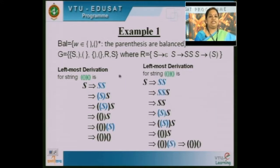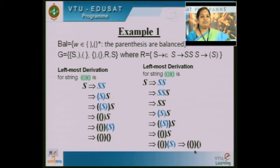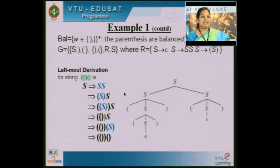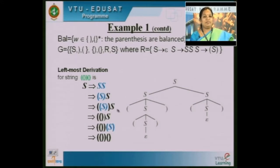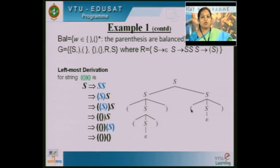Next we go for another leftmost derivation for the same string, starting from SS, obtaining the given string. Once we obtain two leftmost derivations for the same string, the parse tree for the first leftmost derivation looks like this: S tends to SS, this S is replaced as opening parenthesis S closing parenthesis, again this S is replaced as opening parenthesis S closing parenthesis with S tending to epsilon, and the last S is replaced by opening parenthesis S closing parenthesis with S tending to epsilon. Reading the leaf nodes from left to right we obtain: opening, opening, closing, closing, opening, closing.